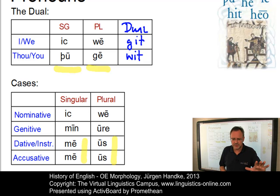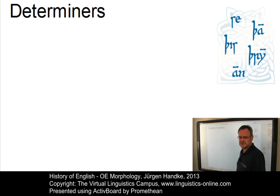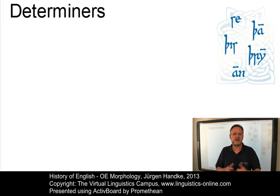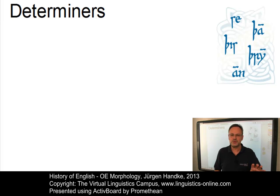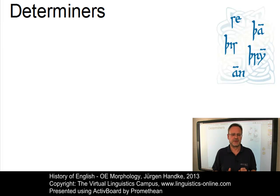Old English had no relative pronouns as such. Instead, it used an indeclinable particle, 'þe,' as a relative pronoun or as a personal pronoun. The class of determiners subsumes numerals such as 1, 2, 3; demonstratives such as 'this' and 'that'; and articles like 'a' and 'the.' Unlike present-day English, Old English had no separate definite article. Instead, the element corresponding to present-day English 'that' served not only as a demonstrative pronoun but also as a marker of definiteness — that is, as an equivalent of present-day English 'the.'